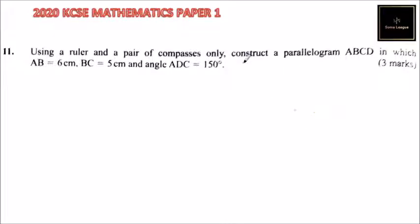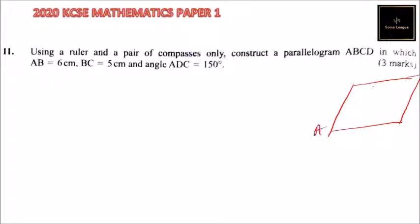So we can make a sketch. We are told ABCD, so we label this as A, B, C, and D, so that we have angle ADC is 150 degrees, AB is 6 cm, and BC is 5 cm.